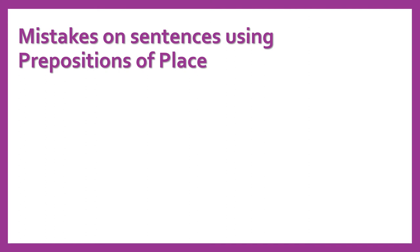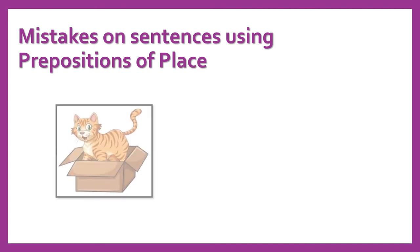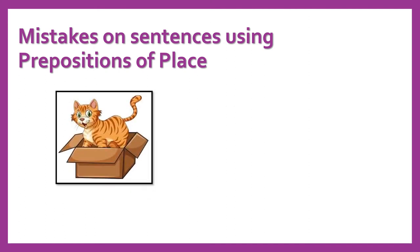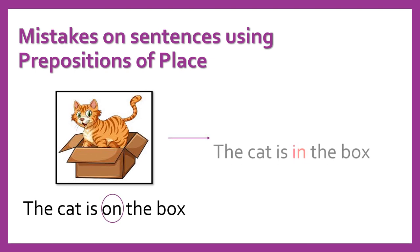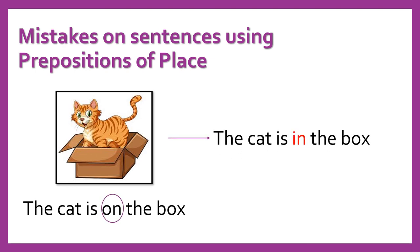Now we're going to see the mistakes on sentences using prepositions of place. Here we need to use pictures. For example, the sentence 'The cat is on the box.' We know that the preposition is wrong, so we have to say 'The cat is in the box.'